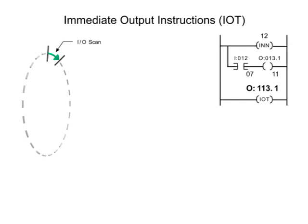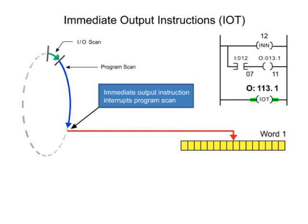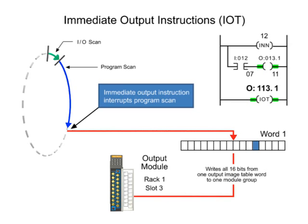The immediate output instruction operates similar to the immediate input instruction. As the scan is interrupted, the bits of the addressed word are updated and the field outputs are energized or de-energized according to the output image table.